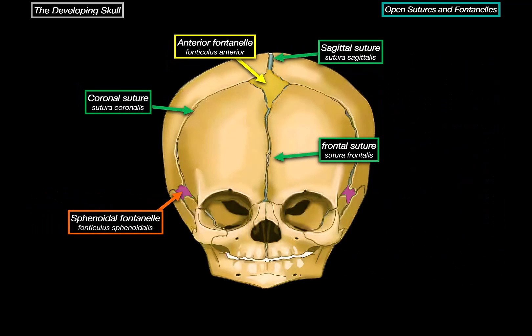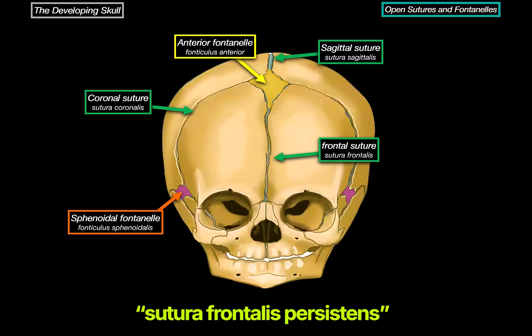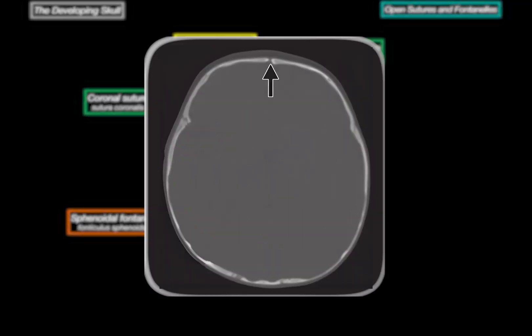In most people, it fuses by the age of 2 years. But interestingly, about 5–10% of the population have a persistent frontal suture into adulthood, called sutura frontalis persistens. It's usually just a normal variant, although in rare cases it can be mistaken for a skull fracture on imaging.